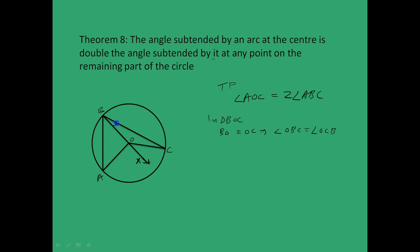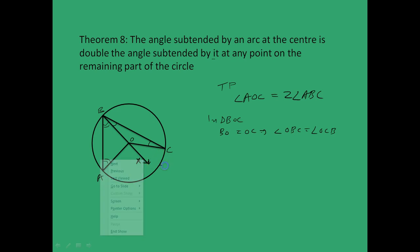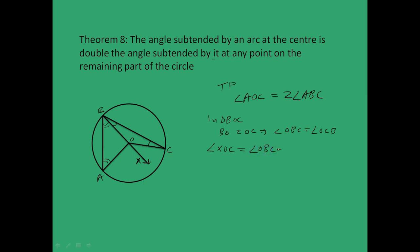Following the same argument for triangle BOA, we get angle ABO equals angle BAO. Now consider BO extended to X. Angle XOC is an external angle and equals the sum of internal angles OBC plus OCB. Substituting OCB equals OBC, we get angle XOC equals 2 times angle OBC. Similarly, angle XOA equals 2 times angle OBA.